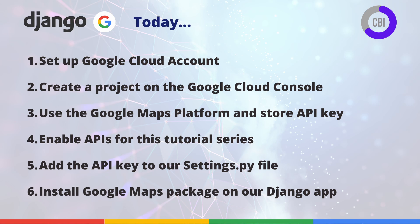In this video we focus on six activities and the first ones are all about arranging the right configuration on the Google platform. We will start by setting up our Google Cloud account, next we will create a project on the Google Cloud console which will function as a container for the service we will be using. We will also use the Google Maps platform and store the API key in a place where we can use it later in our Django app, and we're going to enable a number of APIs that we will be using in this tutorial series.